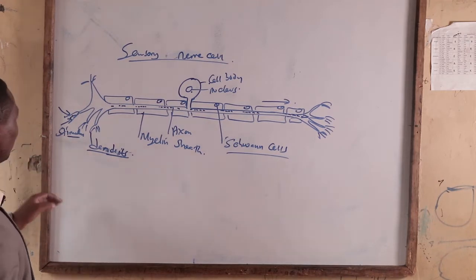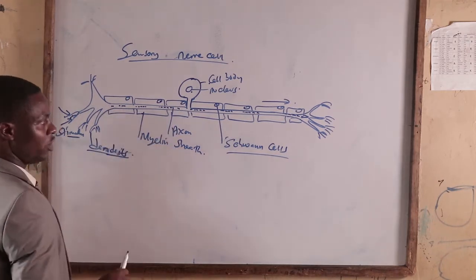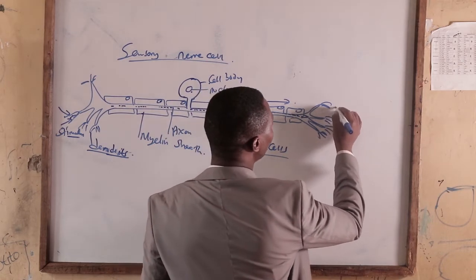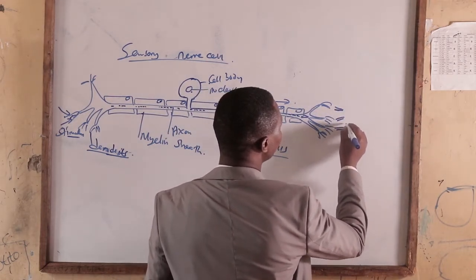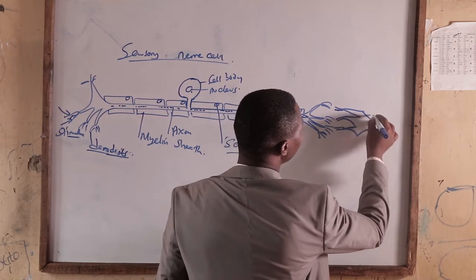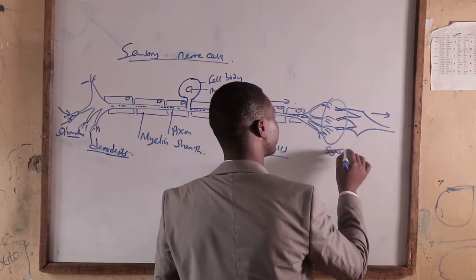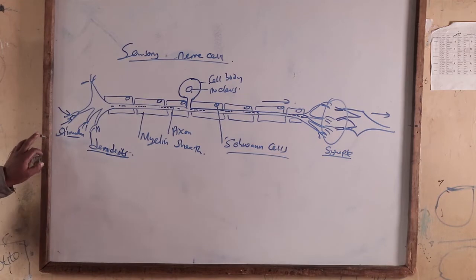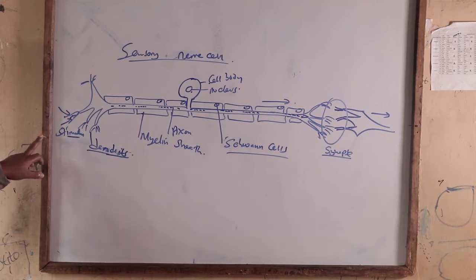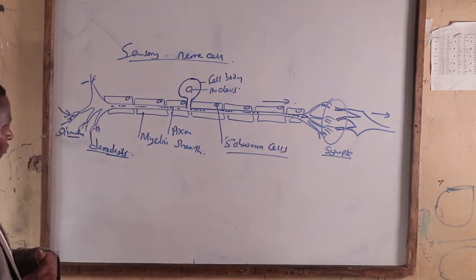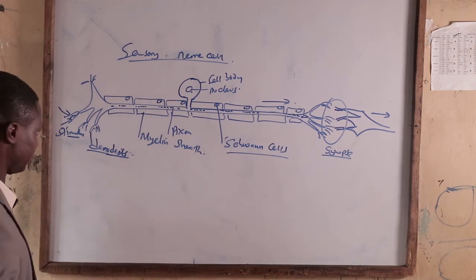The dendrites at the skin receive the stimuli and convert it into an impulse. That impulse is then conducted through the axon through millions of sensory cells that are connected. In between the cells is called a synapse, that is a neural junction between one cell and another. The impulse is conducted from one sensory cell to another until it reaches the central nervous system, where it is taken to the brain for interpretation.